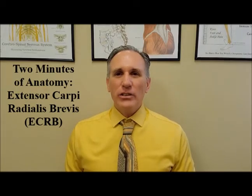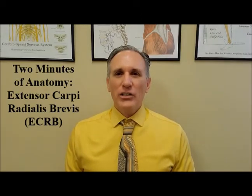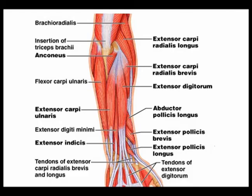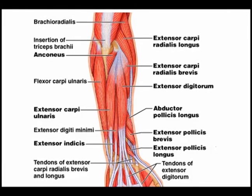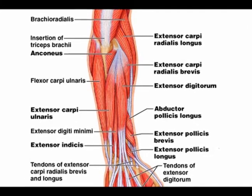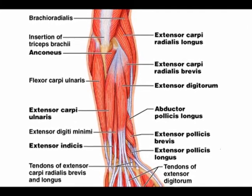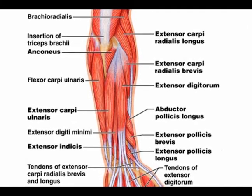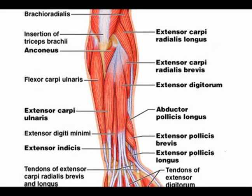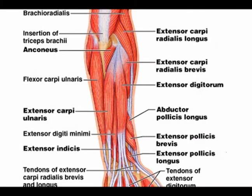The extensor carpi radialis brevis is often abbreviated to the ECRB. It is in the posterior forearm and is classified as one of the superficial muscles in the posterior forearm.